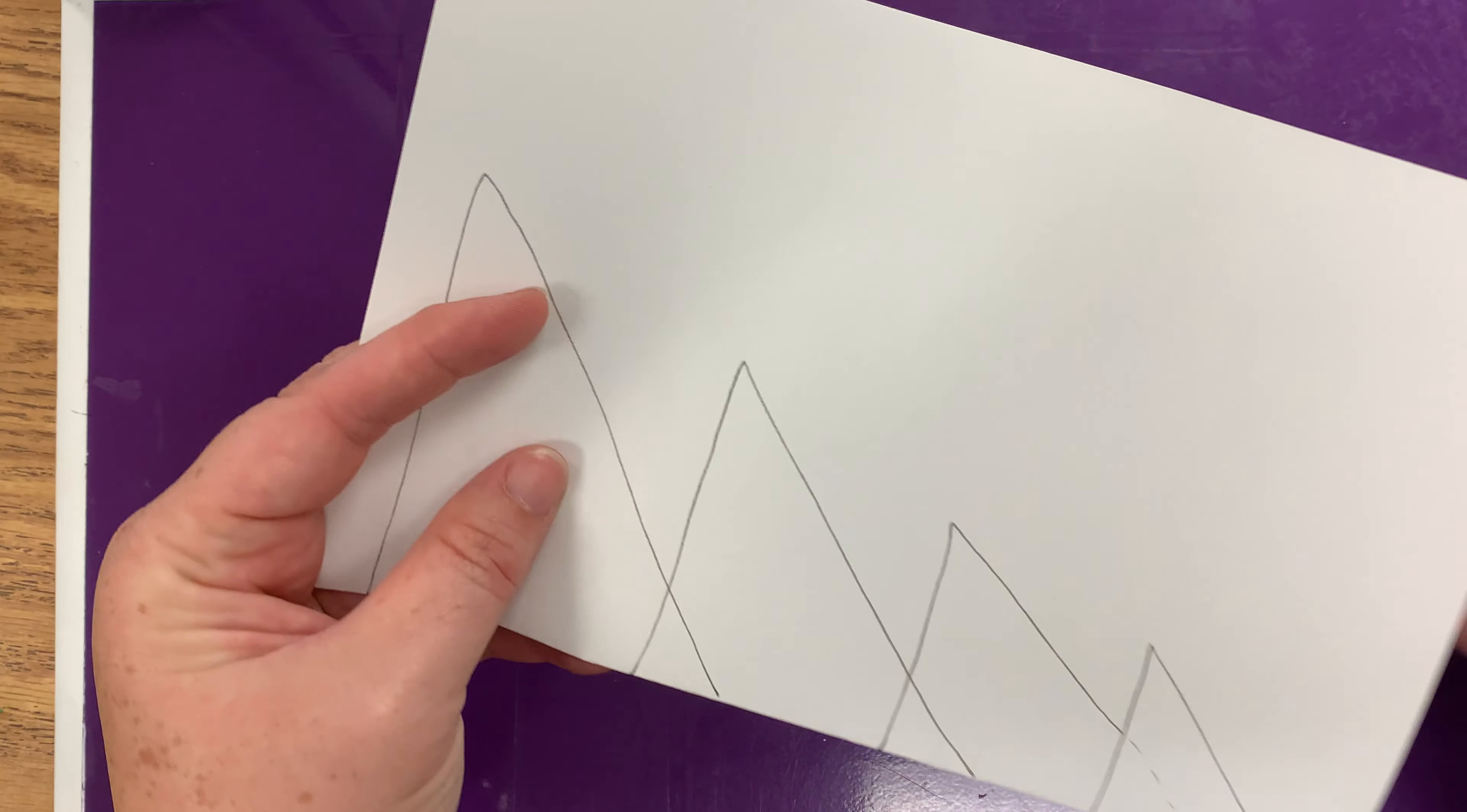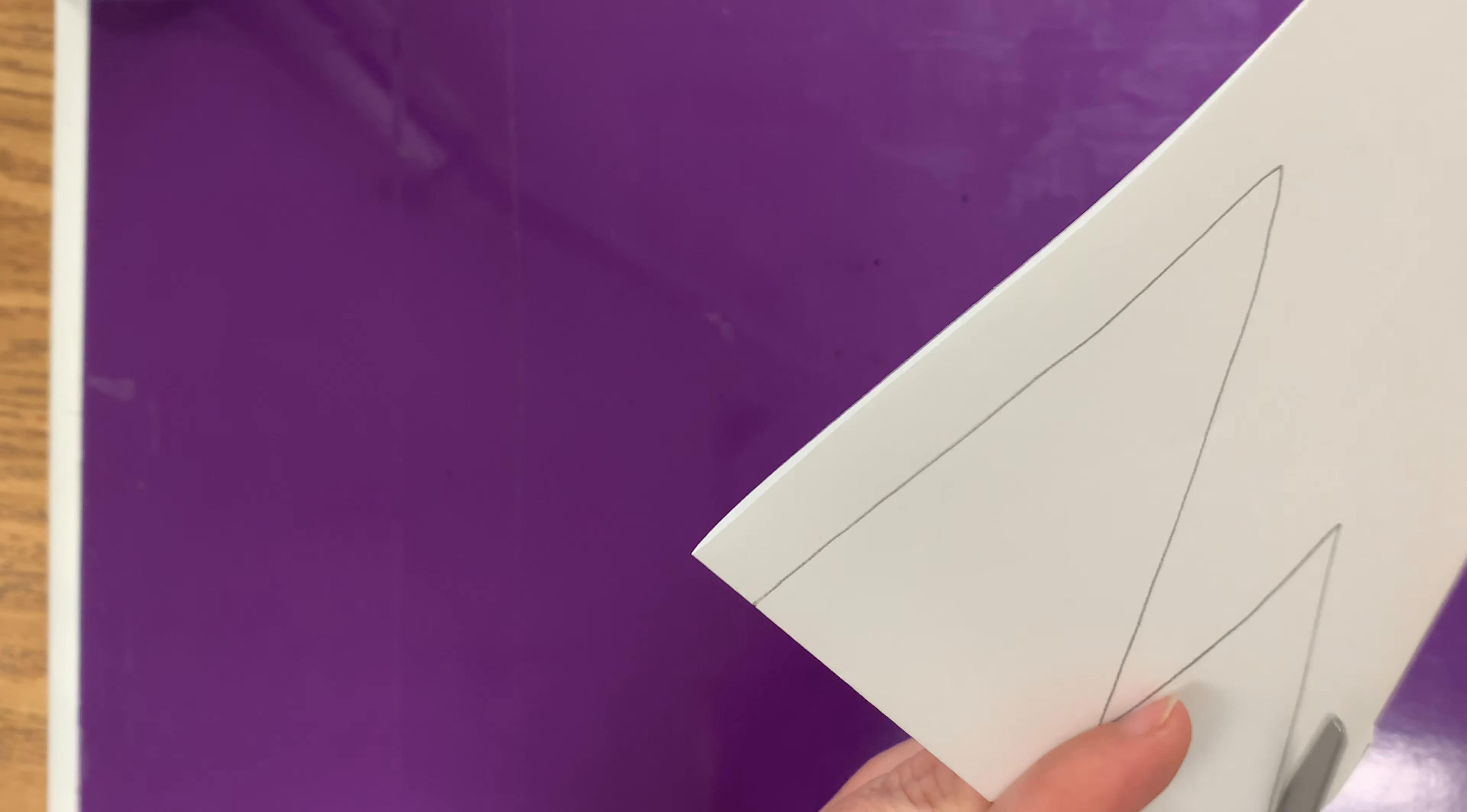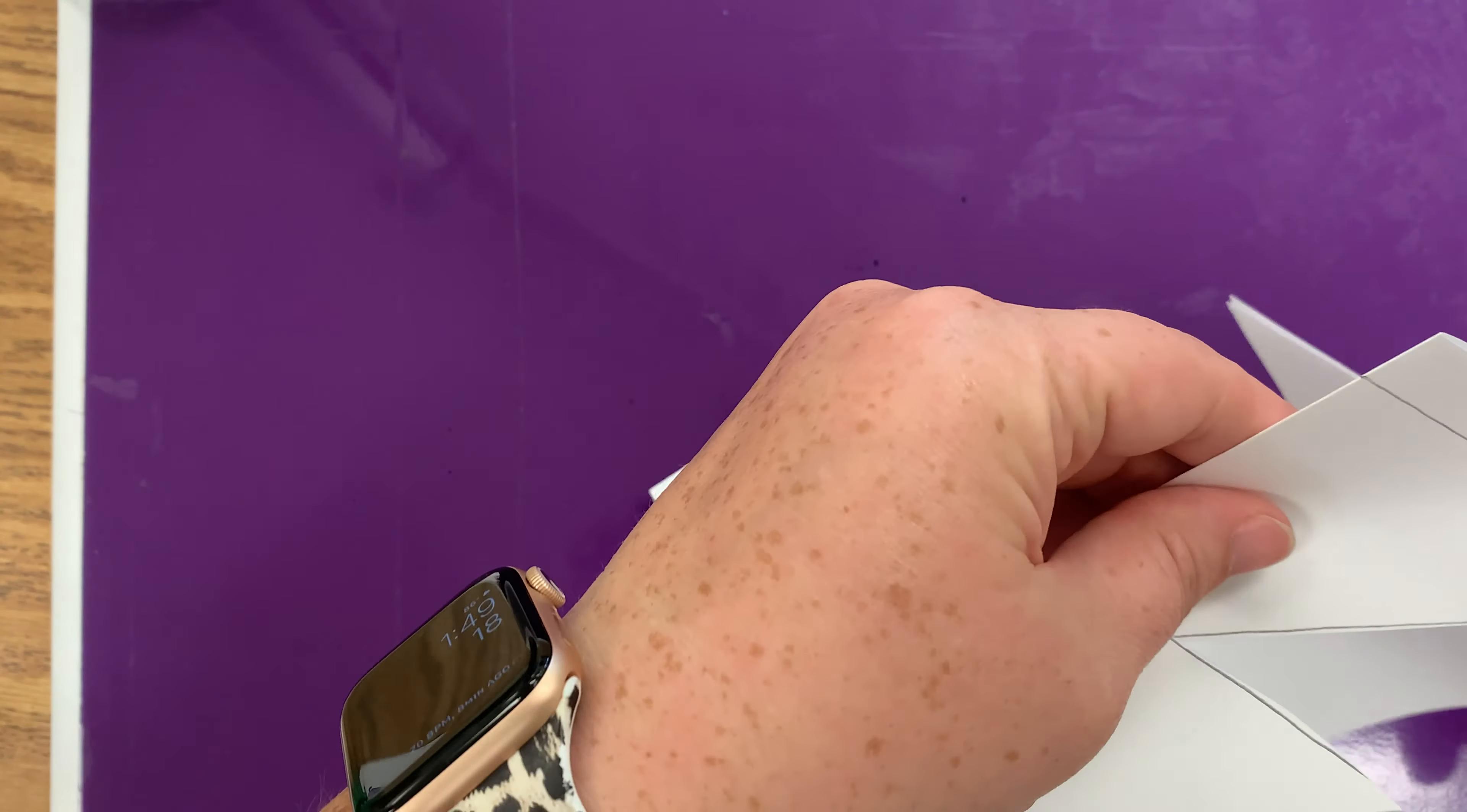So our next step is to cut along the outside edge. So I'm gonna cut this one. I'm just gonna cut here. And when you open him up, you'll see your tree.